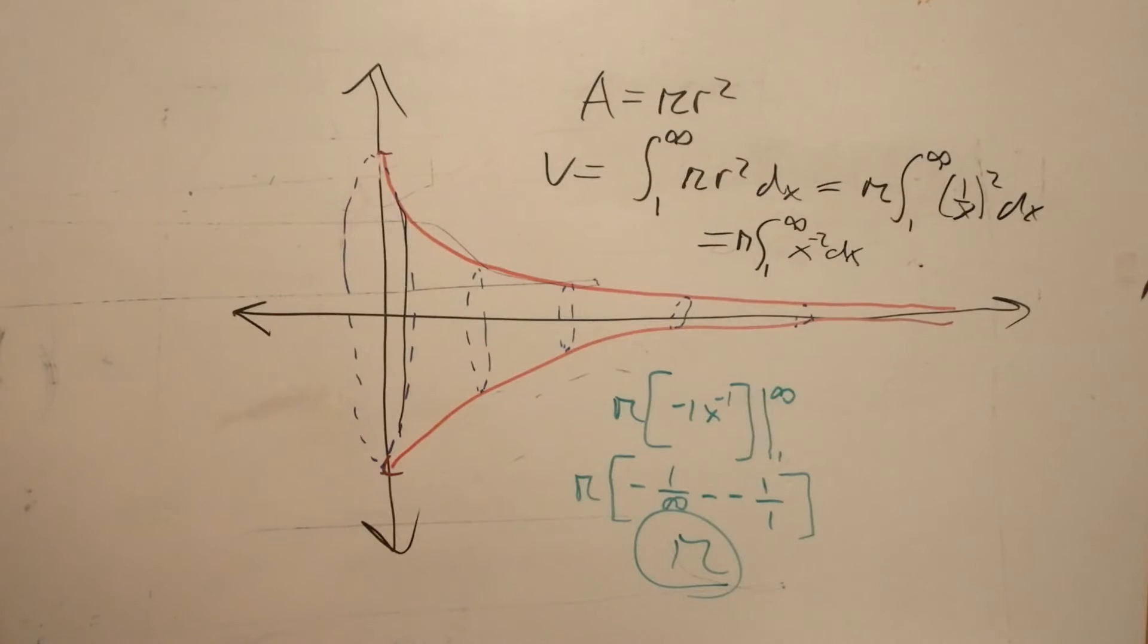Wait, so this cone has a volume of π, but its surface area of infinity? What's going on here? Well, I think the best way of understanding this is understanding what happens when two things come closer to each other.